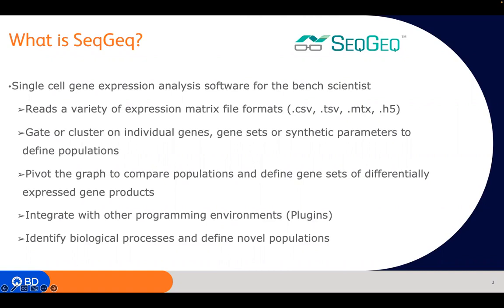BD has a pipeline with Seven Bridges Genomics that exports CSV files. The 10x platform, for example, from CellRanger exports H5 files. With SeekGeek, we can gate or cluster on individual genes, gene sets, or synthetic parameters to define different populations in the workspace.